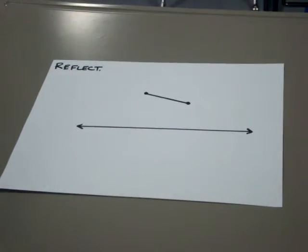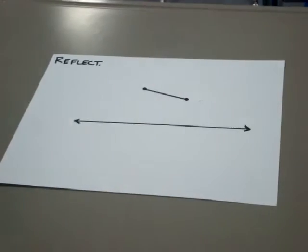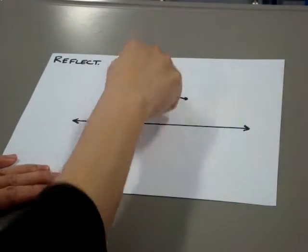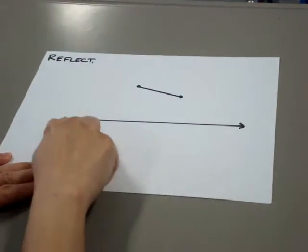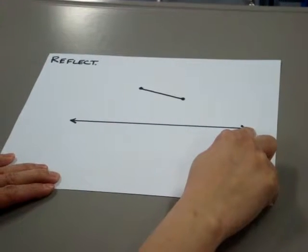In this problem, we are going to reflect this line segment over this line. To do so, we need to make two perpendicular lines that go through these two points, that's perpendicular to this vector line.